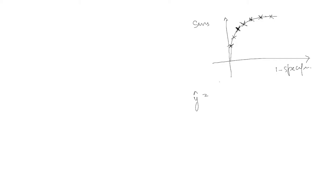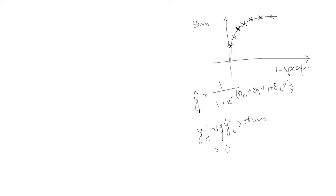Recall how thresholding works in logistic regression: the sigmoid gives you a predicted probability y_hat, and you set predicted class = 1 if y_hat > threshold, else 0. The AUC ROC curve helps you decide which threshold value to use for this decision boundary.